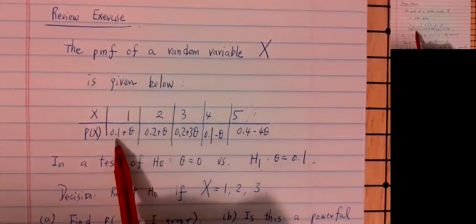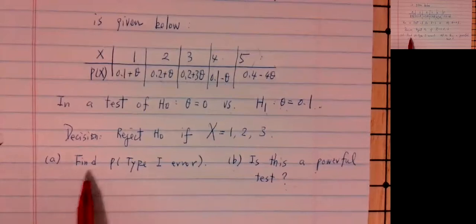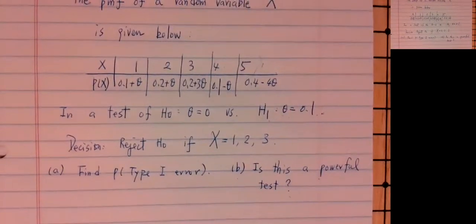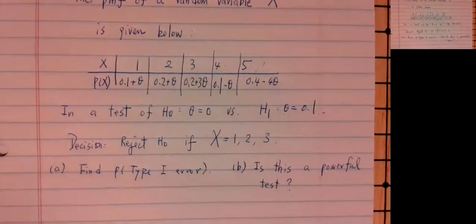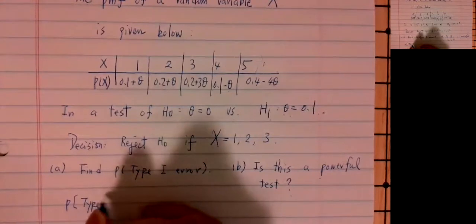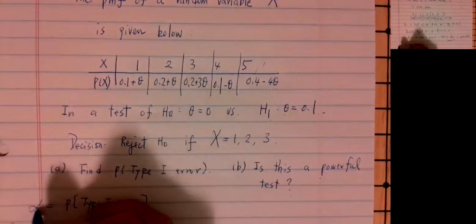Also, each probability should be greater than or equal to 0. Now let's find the type 1 error, which we call alpha. In this case, what's alpha?